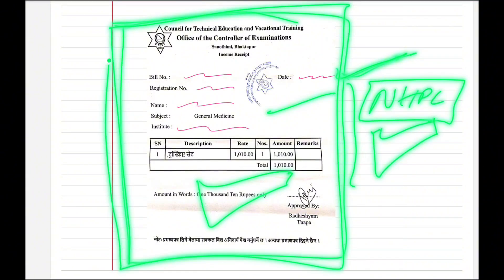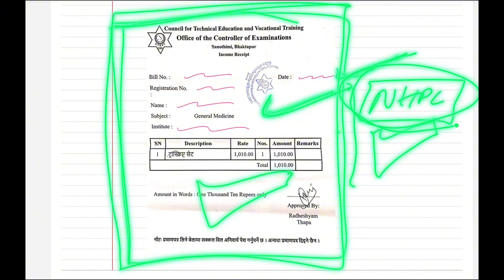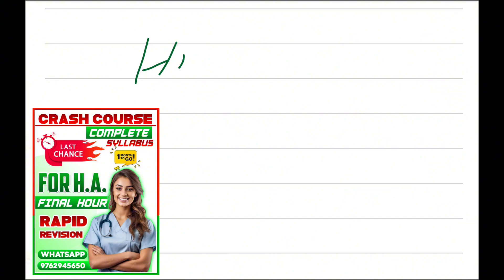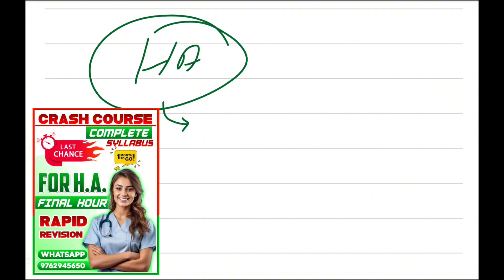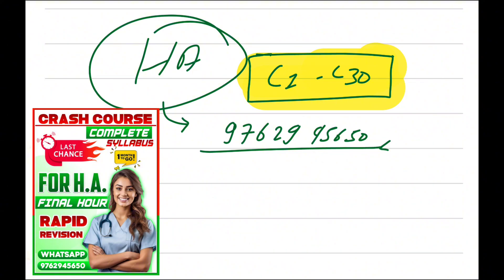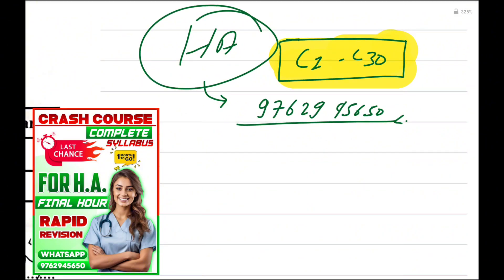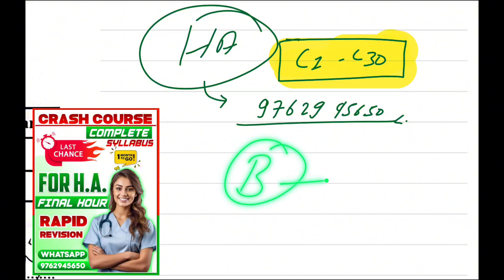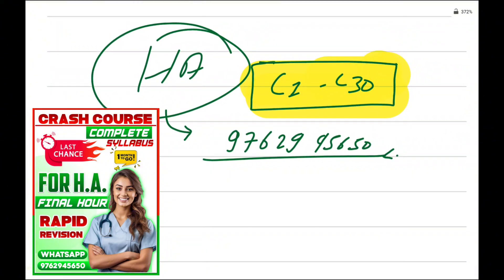In this video, we will see the character certificates and what are the kinds of colleges. We will see the test website, the test form, and complete details. We will see the health assistant and license preparation classes for the notice. We will see the complete study and preparation date. You can see the WhatsApp number 9762945650. License preparation classes 1-30. Okay, thank you so much.